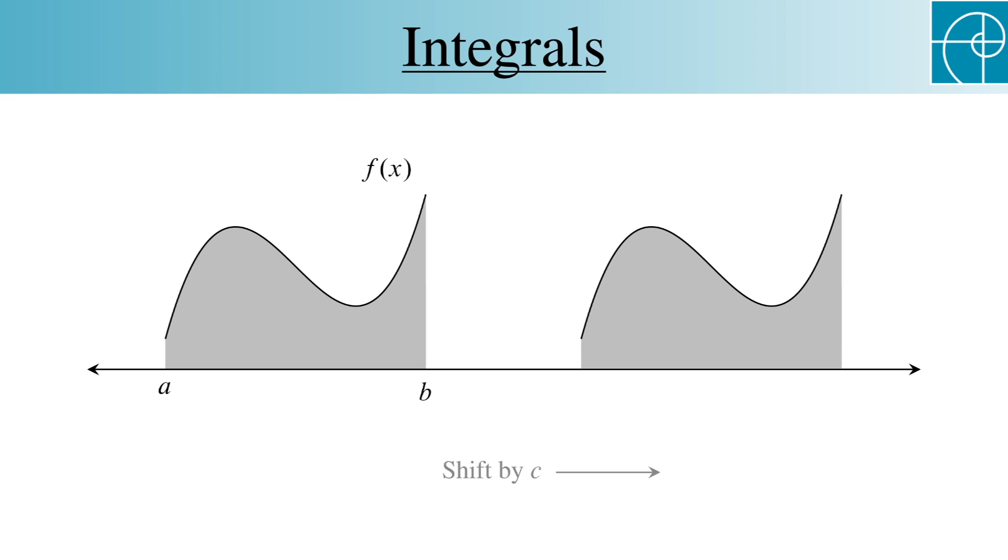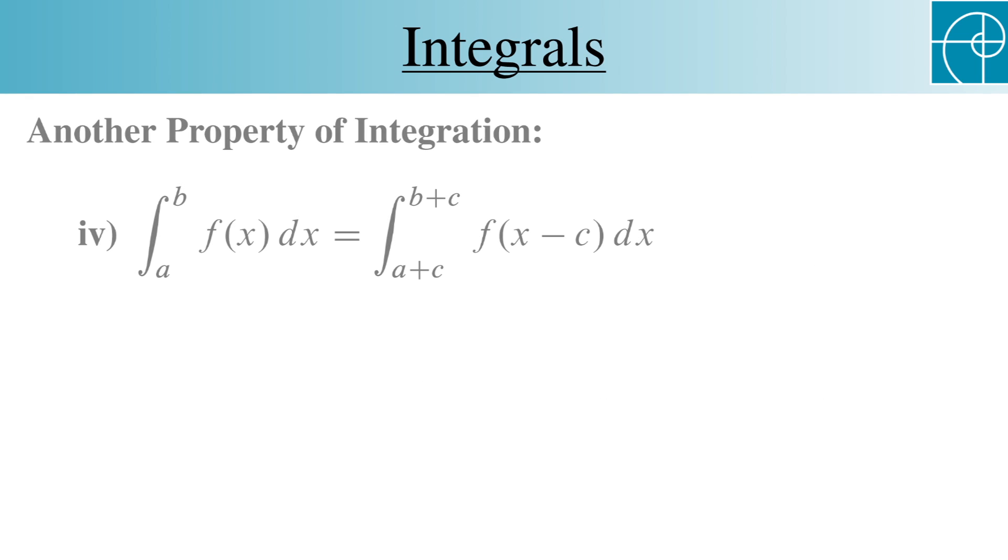The new interval goes from a plus c to b plus c and remember that to shift the function to the right by c, we subtract c from the argument of the function. This means that the integral from a to b of f dx is equal to the integral from a plus c to b plus c of f(x-c) dx.